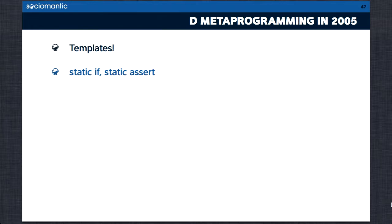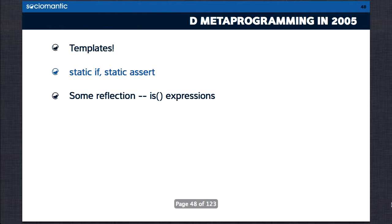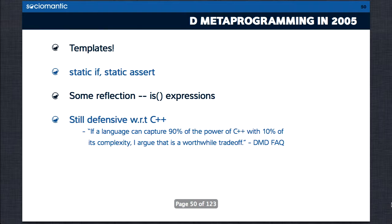D also got some limited reflection capabilities in the form of is-expressions. At the time, they were the messiest thing in the language — I can never remember the syntax for some of the more obscure forms. They work, but they're ugly. And yet, despite the underlying strong fundamentals, D was still defensive. The spec said: if a language can capture 90% of the power of C++ with 10% of its complexity, that's a worthwhile trade-off. This is the state D was in when I first encountered it — it did not know what it had.